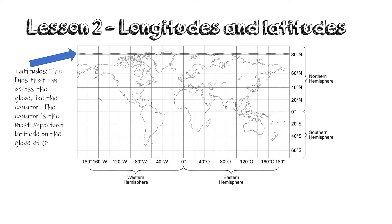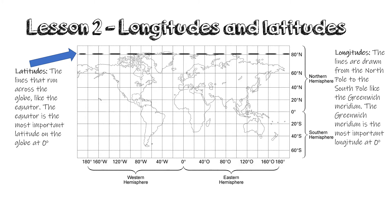Here is an example of a latitude line. Next, we look at the longitudes. These lines are drawn from the North Pole to the South Pole like the Greenwich Meridian. The Greenwich Meridian is the most important longitude at zero degrees. The place or position they indicate are called longitudes and they are measured in degrees east or west of the Greenwich Meridian. Here is an example of a longitude line.